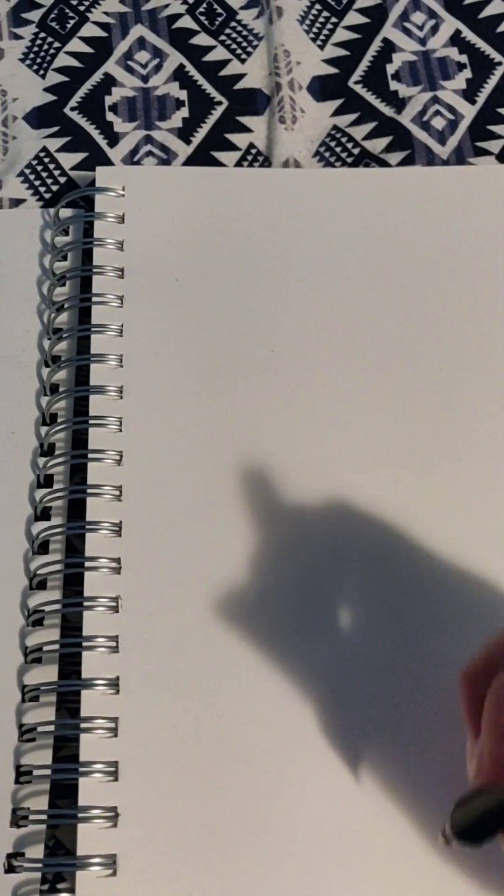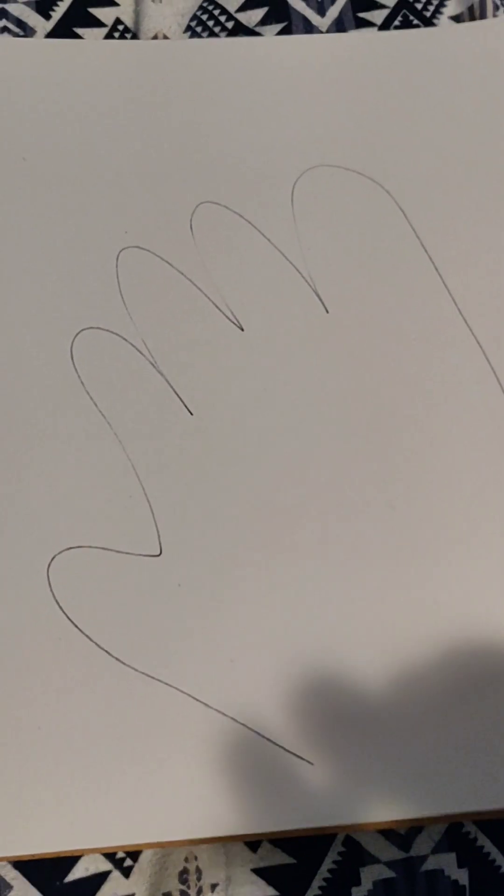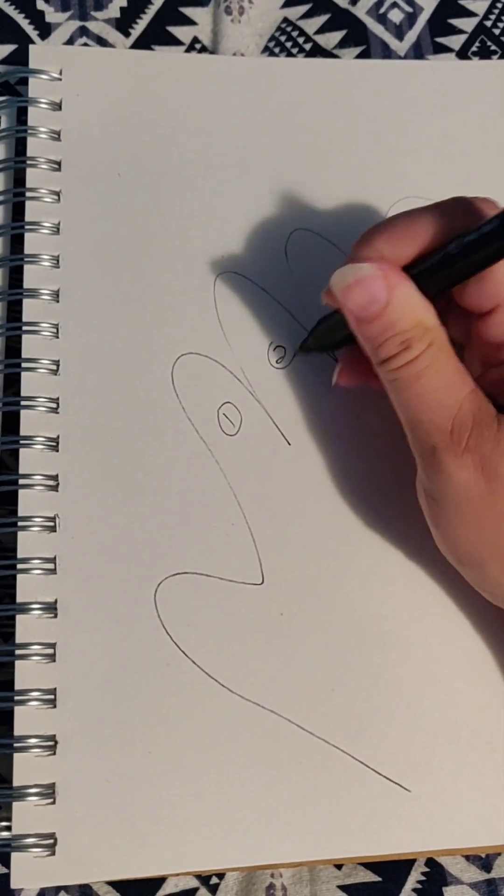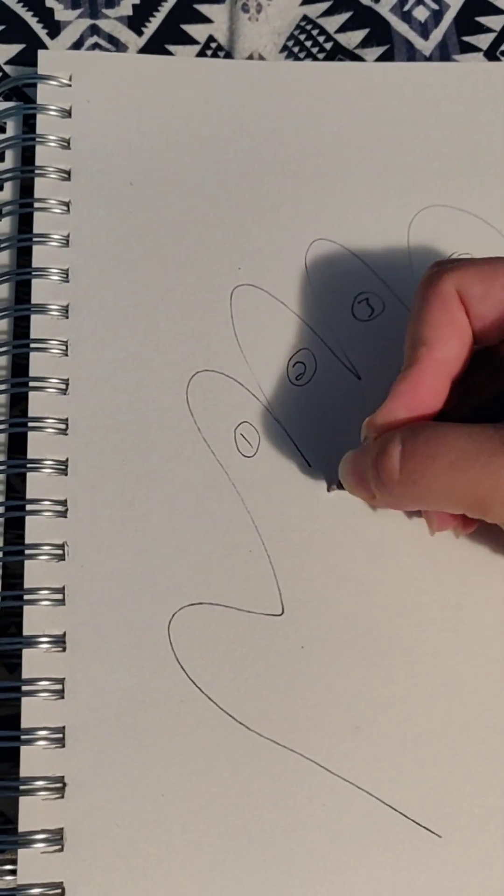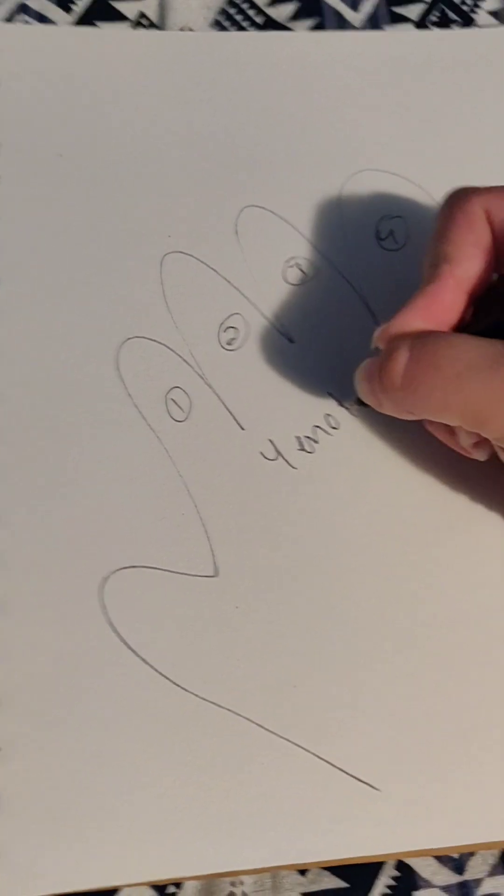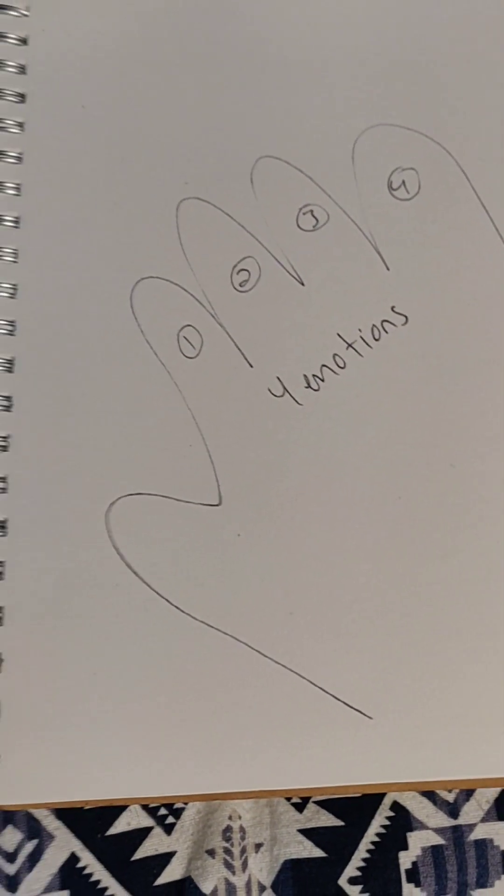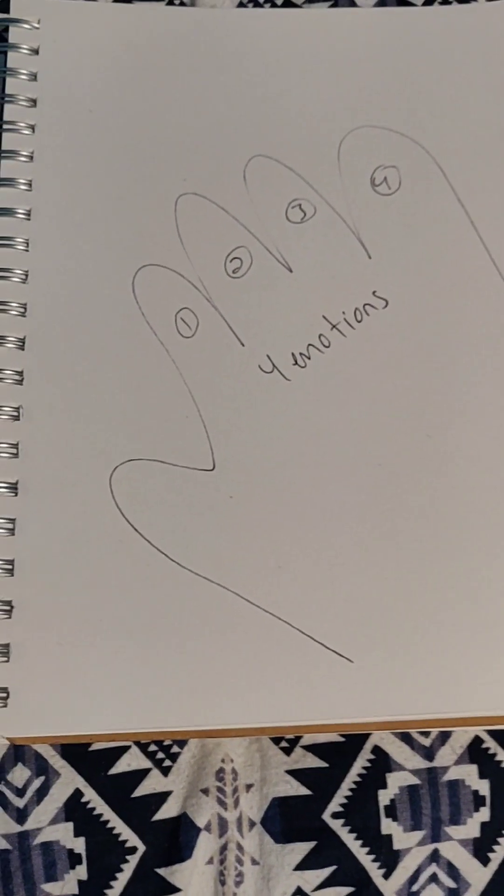So first, step one: draw your hand, left or right, it doesn't matter. Then on your four fingers, put four emotions, whatever you're feeling at the moment. Mine were tired and hopeful. Usually I'm feeling anxious—that's one of my standards for now.